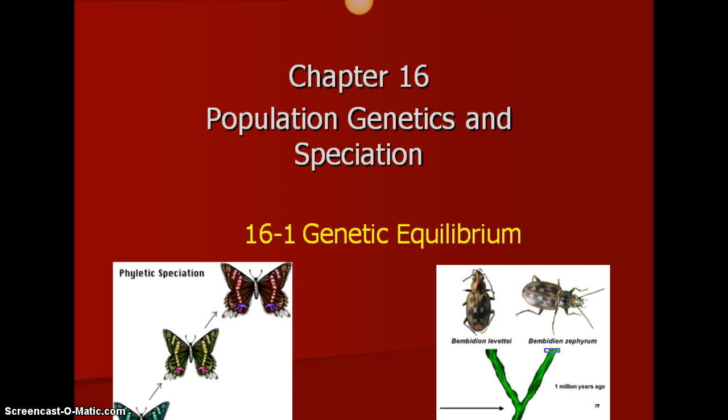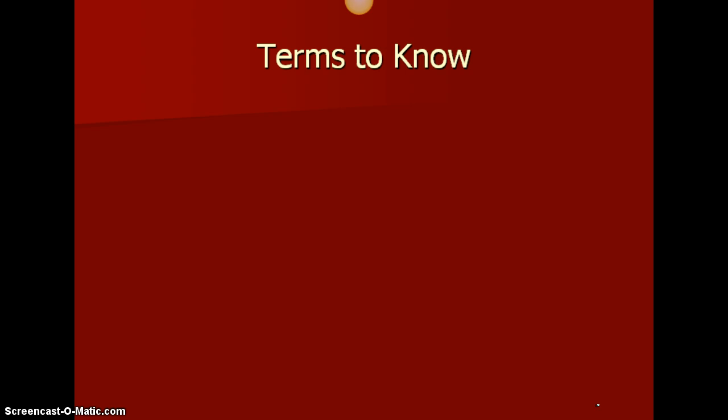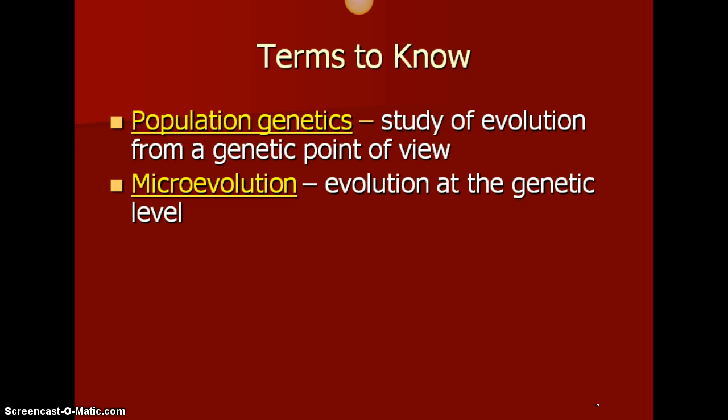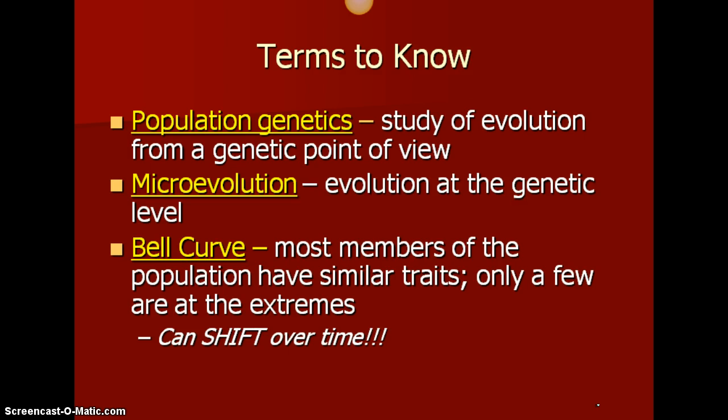Beginning of Chapter 16, we've got some terms to know. Population genetics is the study of evolution from a genetic point of view. We've talked about this a little bit before, but looking at the genes available in a population and seeing how they get distributed over time. Microevolution is evolution at the genetic level, looking at small changes over time. And a bell curve — which traits follow a bell curve — is on your notes packet.